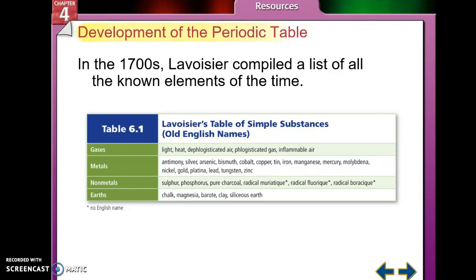Starting off, there was a guy named Lavoisier, and in the 1700s he compiled a list of all the known elements at the time. If you look at his table of simple substances, he had things like light, heat, dephlogisticated air, phlogisticated gas, and flammable air. The metals that we still see on the periodic table: antimony, silver, arsenic, bismuth, cobalt, copper, tin, iron, manganese, mercury, molybdenum, nickel, gold, platinum, lead, tungsten, zinc, sulfur, phosphorus, pure charcoal, and then a bunch of French things I'm not going to try to say, and then the earths. This was the first time that anybody really tried to classify matter on what is now the periodic table.